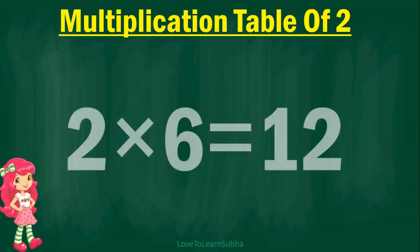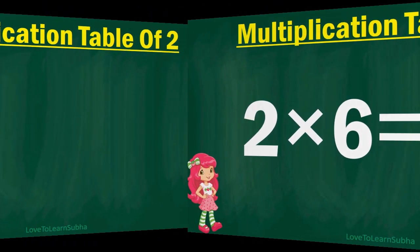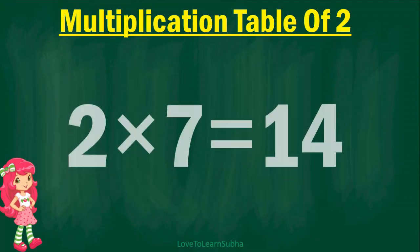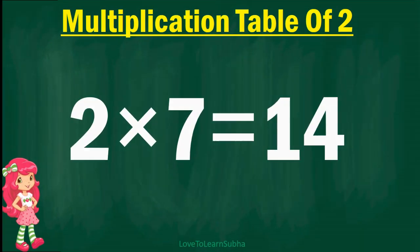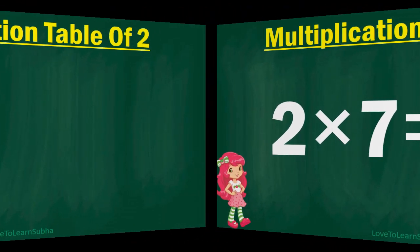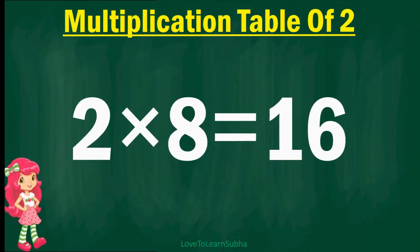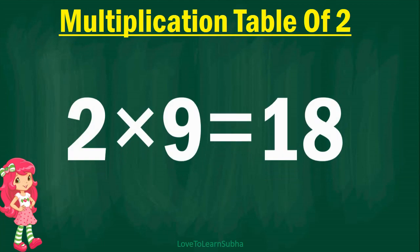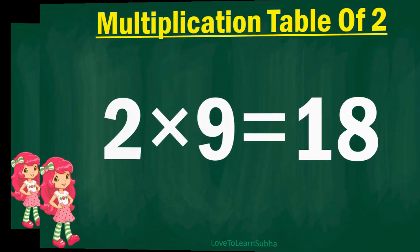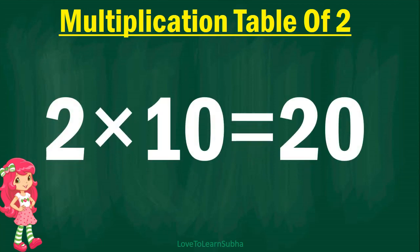2 6s are 12, 2 7s are 14, 2 8s are 16, 2 9s are 18, 2 10s are 20.